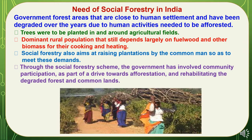Here we will go through the need for Social Forestry in India. Government forest areas that are closed to human settlement and have been degraded over the years due to human activities needed to be afforested. Trees were to be planted in and around agriculture fields. The dominant rural population that still depends largely on fuel wood and other biomass for cooking and heating should be supported. Social Forestry also aims at raising plantations by the common man to meet these demands, involving community participation in afforestation and rehabilitating degraded forest and common lands.